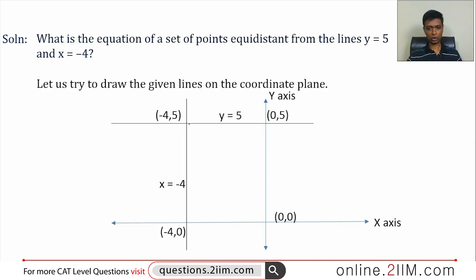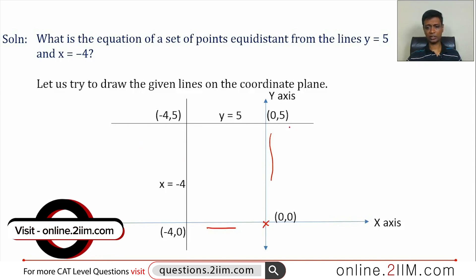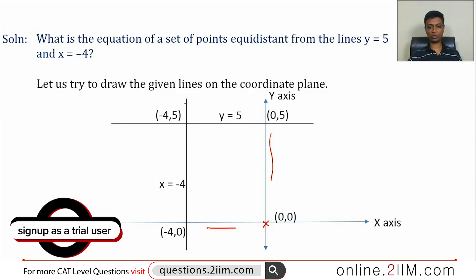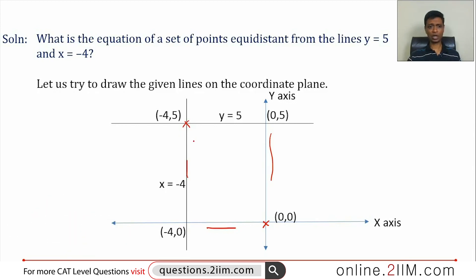Let's draw the diagram. This is the x-axis and this is the y-axis — they meet at the origin. Line y = 5 is parallel to the x-axis and passes through (0, 5), going infinitely. Line x = -4 is parallel to the y-axis and goes infinitely in both directions. These two lines meet at (-4, 5). This line meets here at (0, 5) and (-4, 0). So let's visualize this diagram.